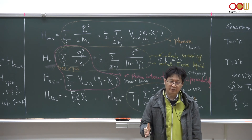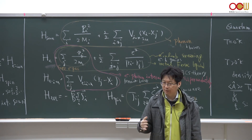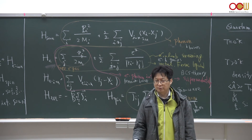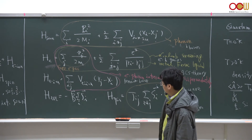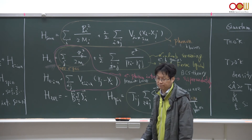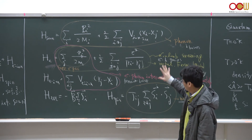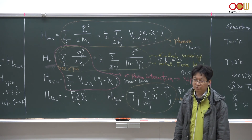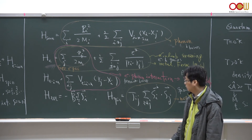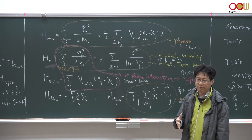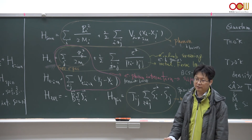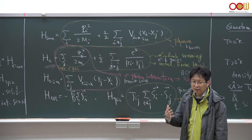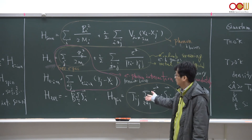Phonons are bosons, and magnons are also bosons. The electron-phonon interaction is the coupling between fermions and bosons. These quasi-particles — whether fermions or bosons — satisfy different quantum statistics: fermions satisfy the Fermi-Dirac distribution, and bosons satisfy the Bose-Einstein distribution in statistical mechanics. We will discuss how these different quantum statistics of quasi-particle fermions and quasi-particle bosons affect the low-temperature properties of solids.